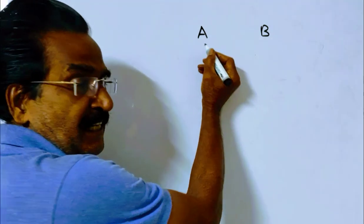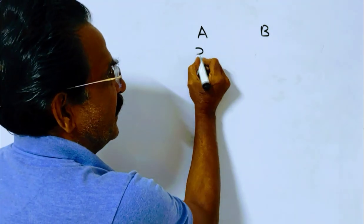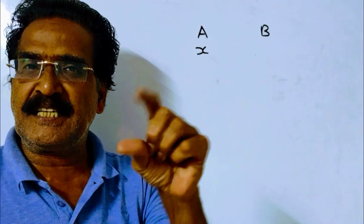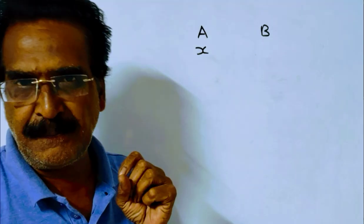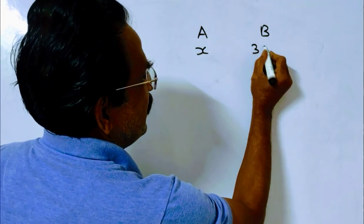Friends, say the cost price of article A is X, then the cost price of article B is 350 minus X.